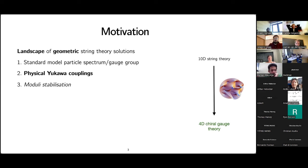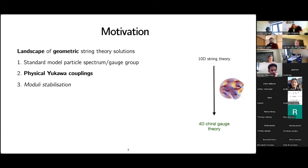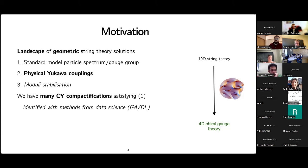Suppose there exists a landscape of geometric string theory solutions — a vast landscape with many orders of magnitude of consistent solutions. We might want three important features: first, something that looks like the Standard Model in terms of particle spectrum and gauge group; second, physical Yukawa couplings resembling the Standard Model; and third, moduli stabilization and SUSY breaking. Many Calabi-Yau compactifications satisfy the first condition, typically identified using data science methods like genetic algorithms and reinforcement learning.